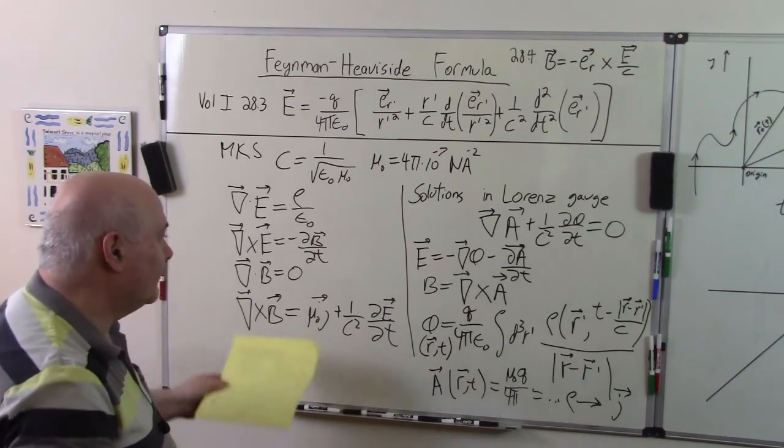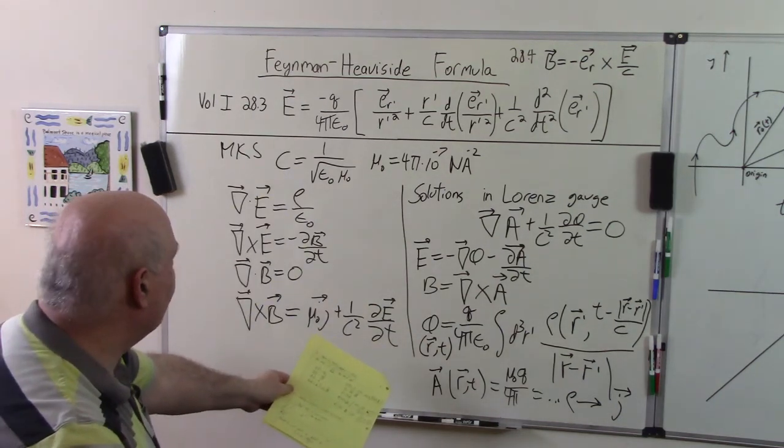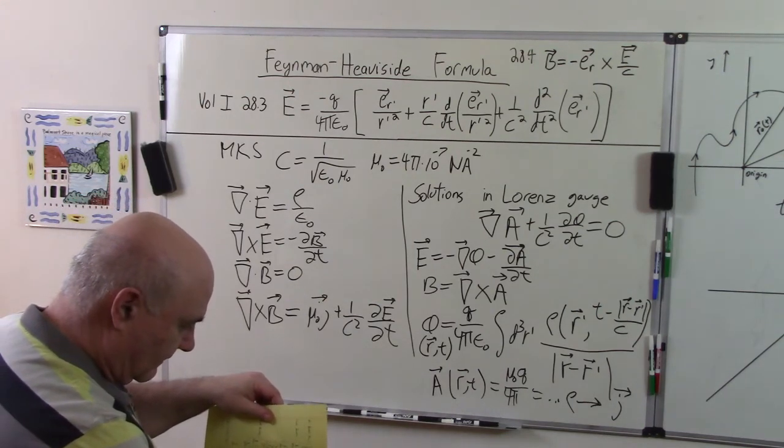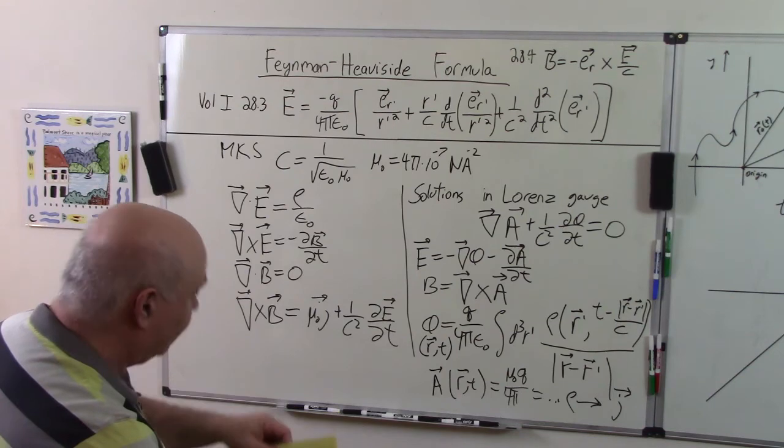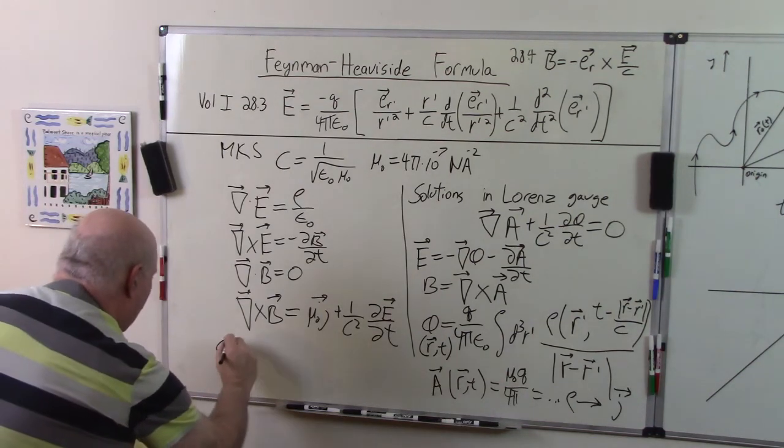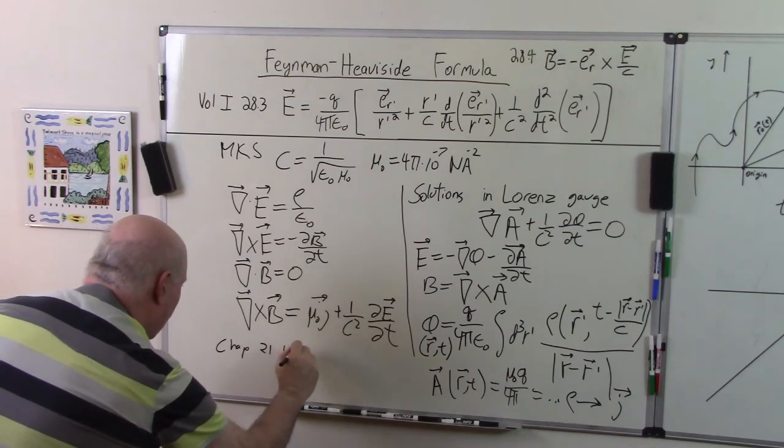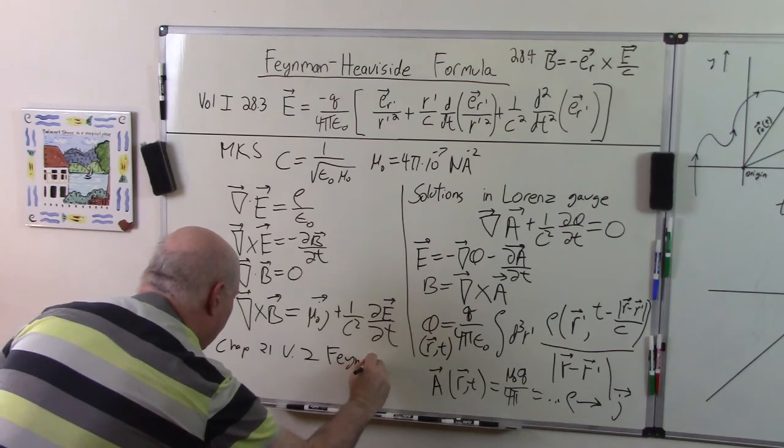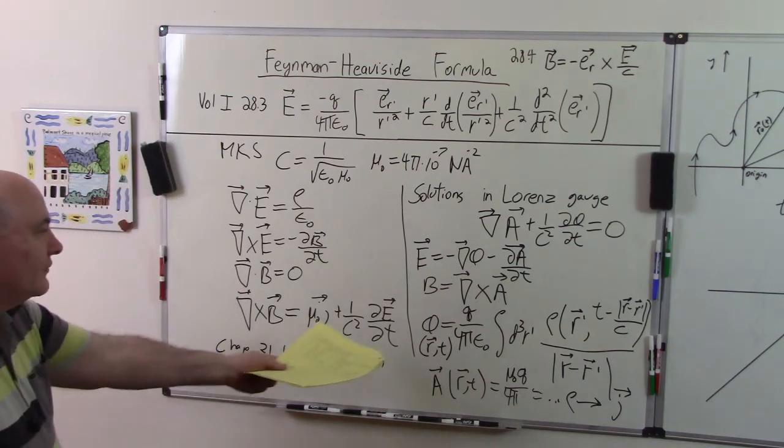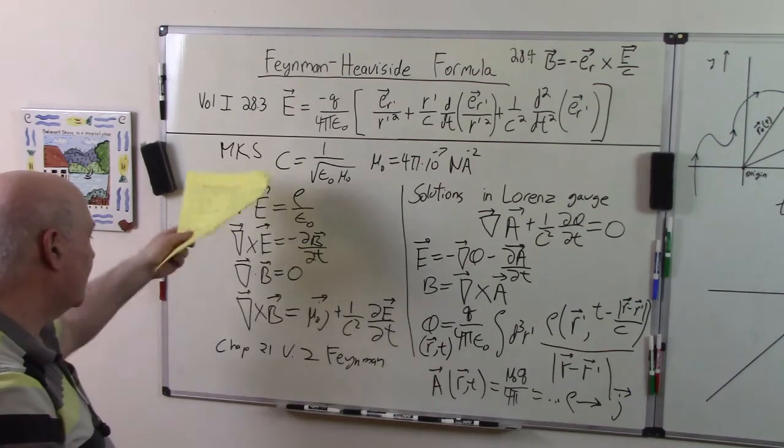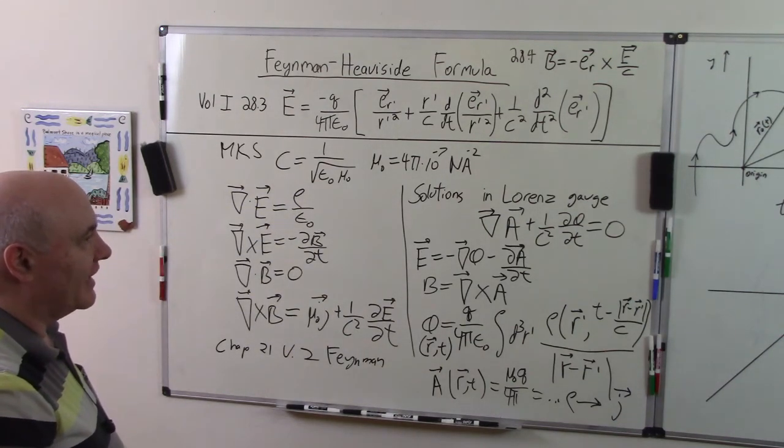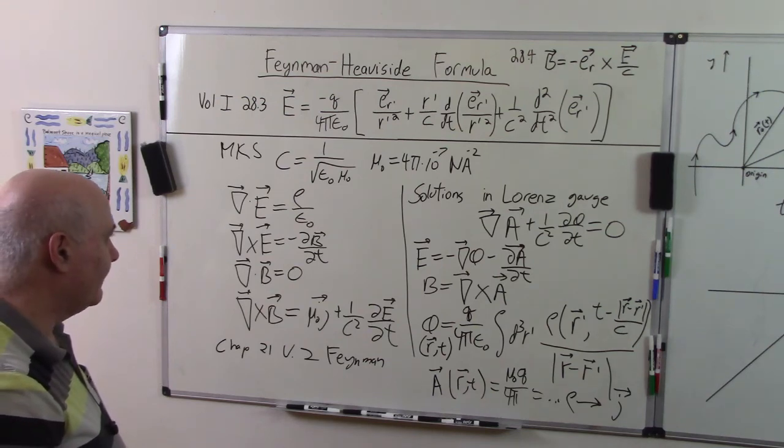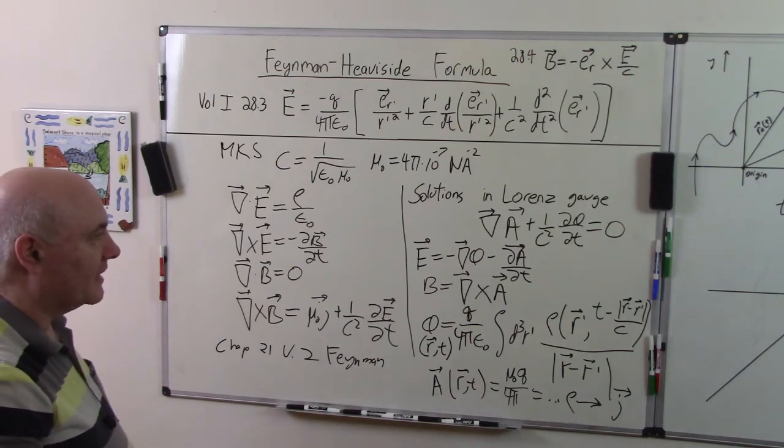So these are Maxwell's equations, these are the retarded solutions. Feynman in Chapter 21 Volume 2 derives these formulas or shows that they satisfy the wave equations and everything. I'm not going to go through that. That's covered in all the textbooks and they show that in good detail.